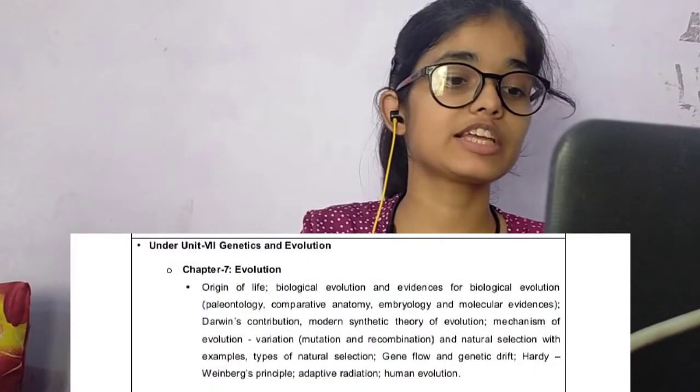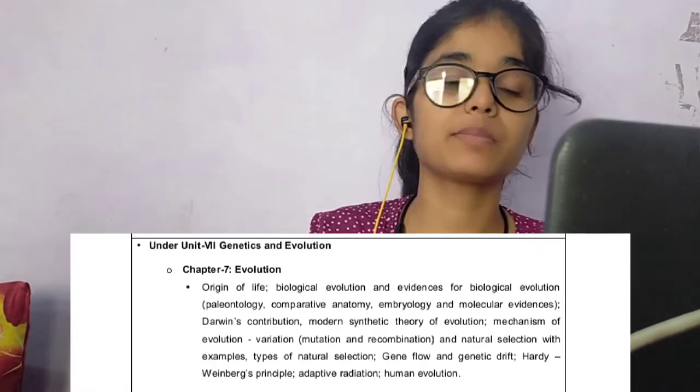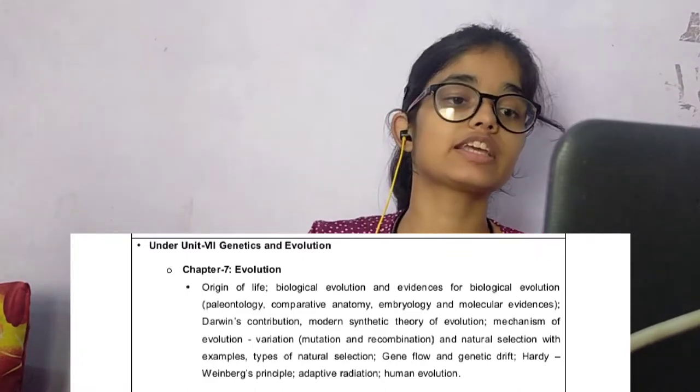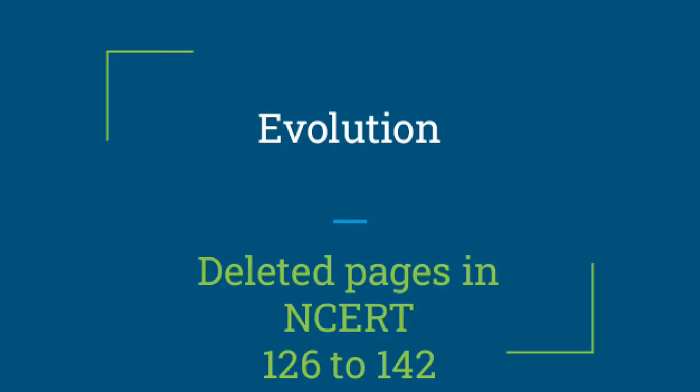Let's talk about the next unit: Genetics and Evolution. In this unit, one chapter is completely removed — Chapter 7, Evolution, is not necessary to read. But Chapter 5 and 6 — Principles of Inheritance and Variation, and Molecular Basis of Inheritance — are fully studied. The weightage for Genetics and Evolution remains the same at 18 marks.